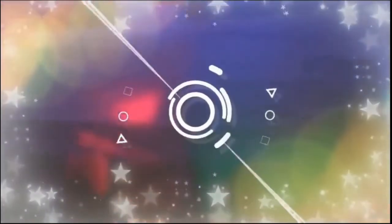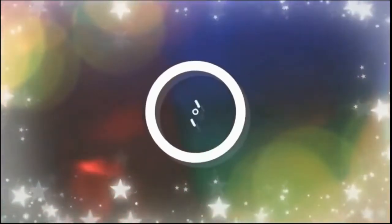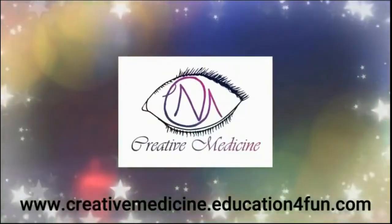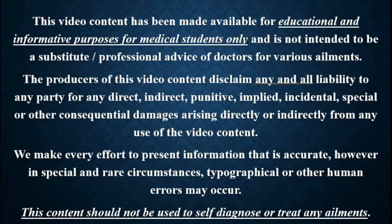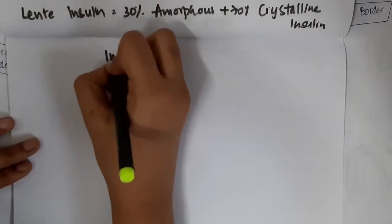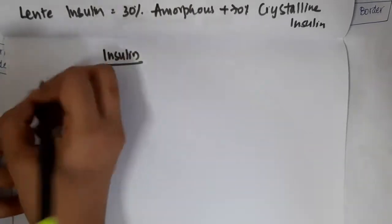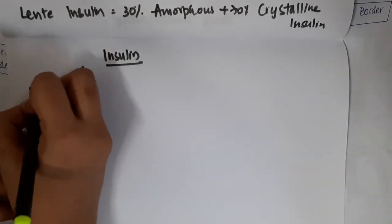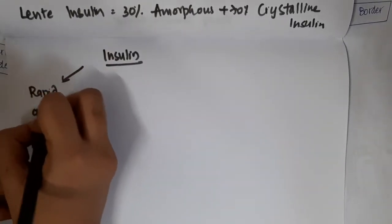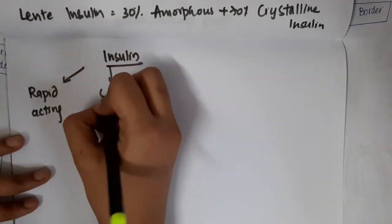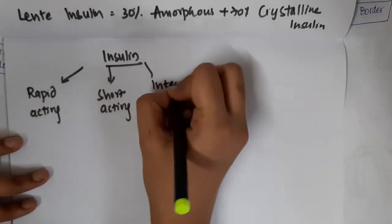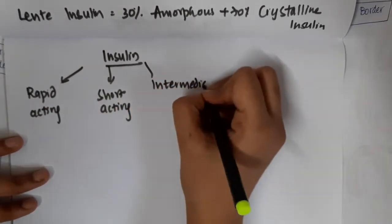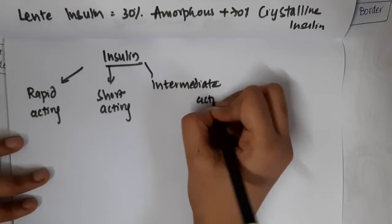Hello friends, welcome to Creative Medicine. In this lecture we will learn about the classification of insulin. Insulin is divided into rapid acting insulin, short acting insulin, intermediate acting insulin, and long acting insulin.